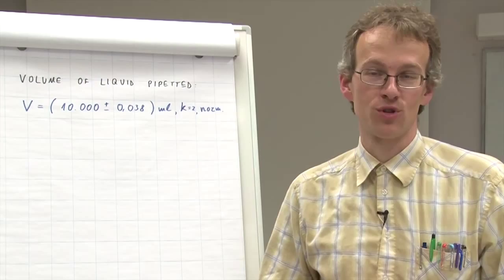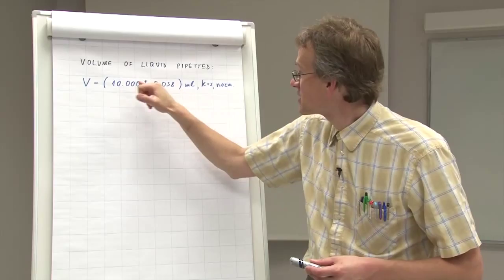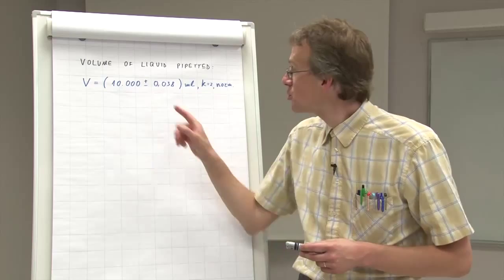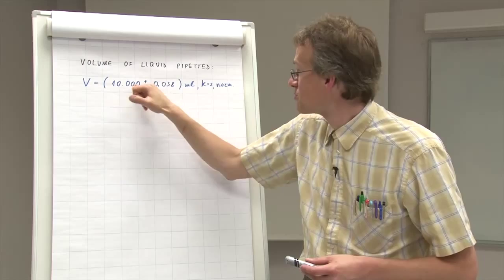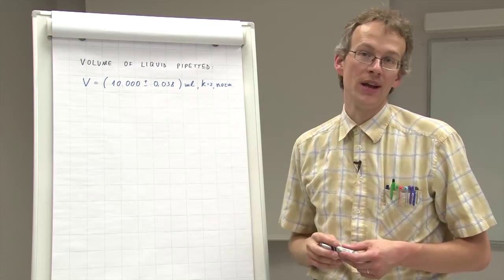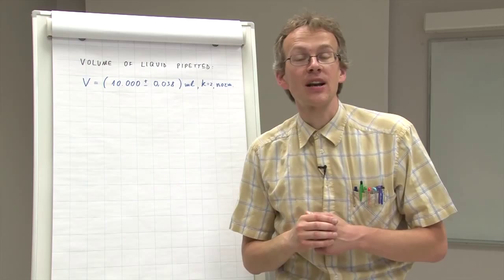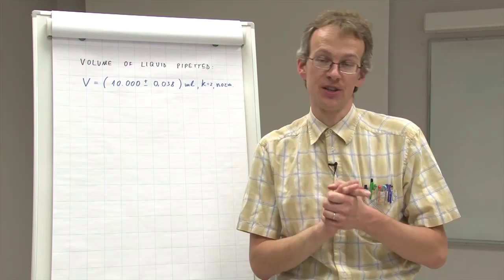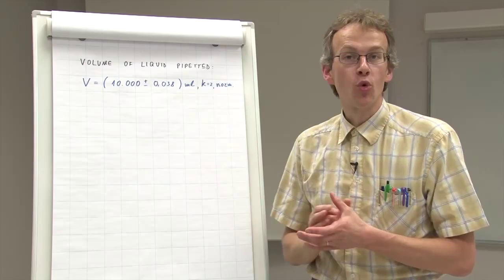Whenever we present the result, we also have to think about the number of decimals that we give here. I've put here three decimals both for the result and for the uncertainty, but I did not explain in any way why I picked this number of decimals. There are several conventions that are used so that there is no one single universal rule.